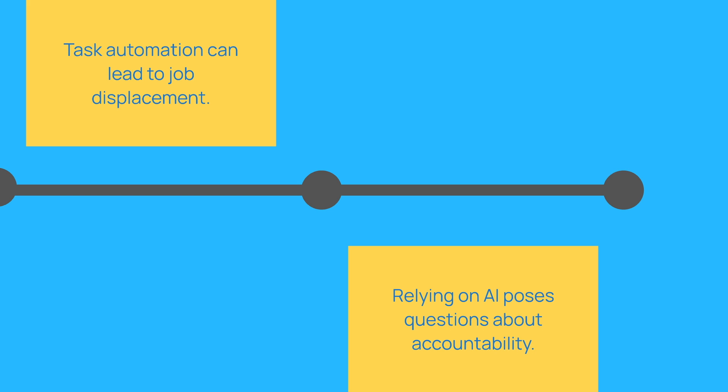And lastly, accountability and transparency. Sometimes, it's hard to comprehend why AI makes the decisions it does, which can make it difficult to hold anyone accountable if something goes wrong.